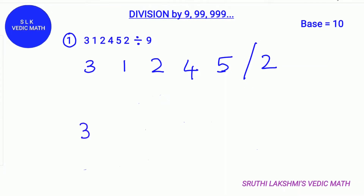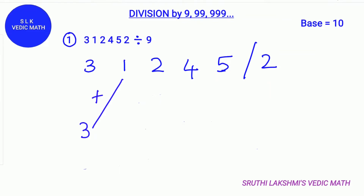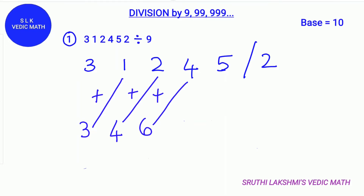First write down the first digit down as it is. Next add 3 plus 1 to get the next digit. 3 plus 1 is 4. Next add 4 with the next digit 2. 4 plus 2 is 6. Then add 6 plus 4 which is 10.